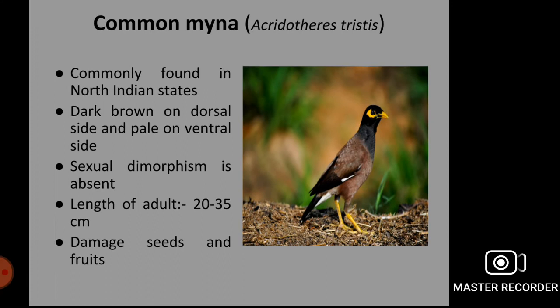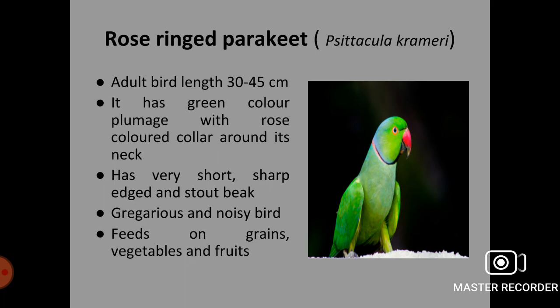Next species is the rose-ringed parakeet, Psittacula krameri. Adult bird length is 30 to 45 cm. The colour is green plumage with a rose-coloured ring around its neck. It has a very short, sharp-edged and stout beak. It is a gregarious and very noisy bird which feeds on grains, vegetables and fruits.